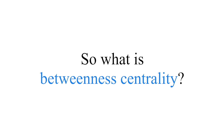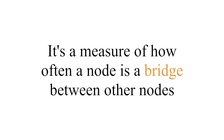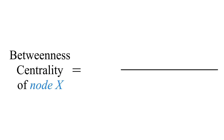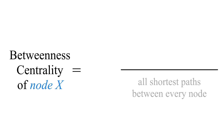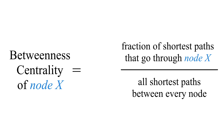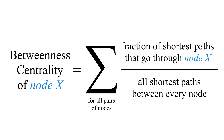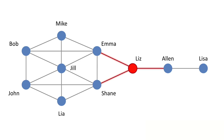So what is betweenness centrality? Betweenness centrality is a measure of bridgedness. We calculate all the shortest paths between the nodes, then we calculate the fraction of the shortest paths going through any one node, and then we sum up the fractions over all pairs of nodes. When we look at our example graph, instead of Emma and Shane being the critical players as in closeness centrality, now we see Liz.